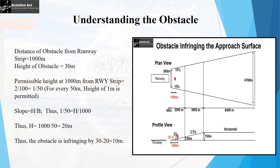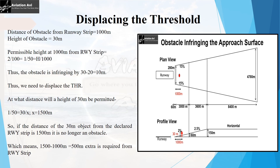We now have two choices: either close the runway because the approach surface is being infringed, or displace the threshold and continue operations — we choose the latter. We calculate at what distance a height of 30 meters will be permitted: 1/50 = 30 / distance, giving a distance of 1,500 meters. So this 30-meter obstacle would be permissible at 1,500 meters from the beginning of the approach surface, not 1,000 meters — meaning we need an extra 500 meters.